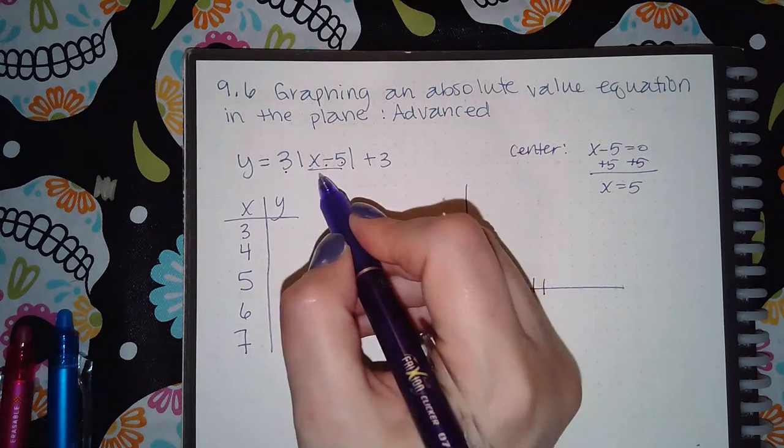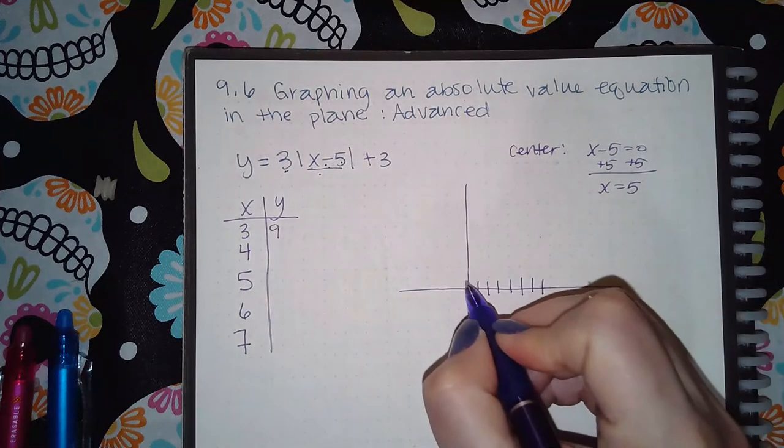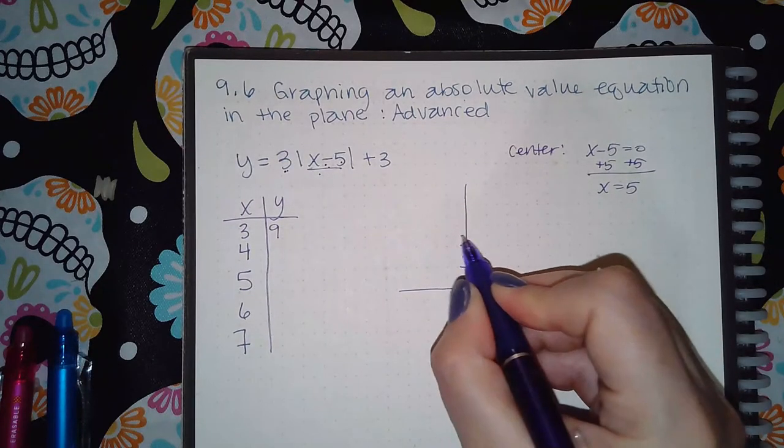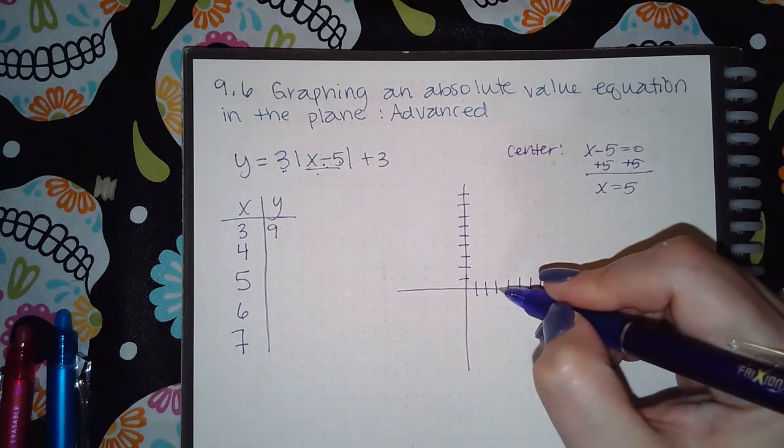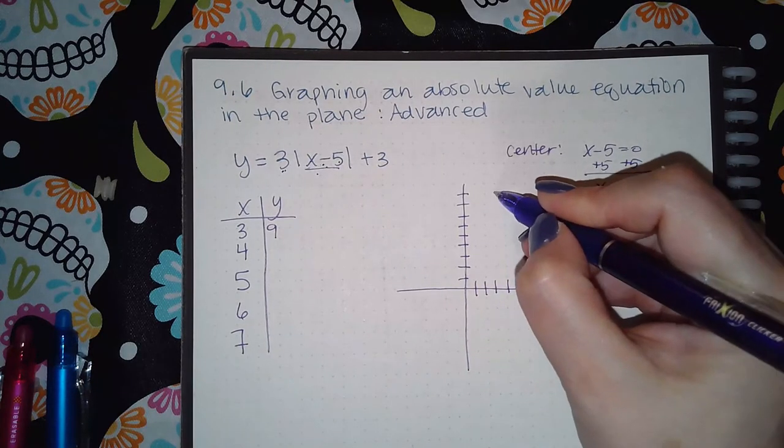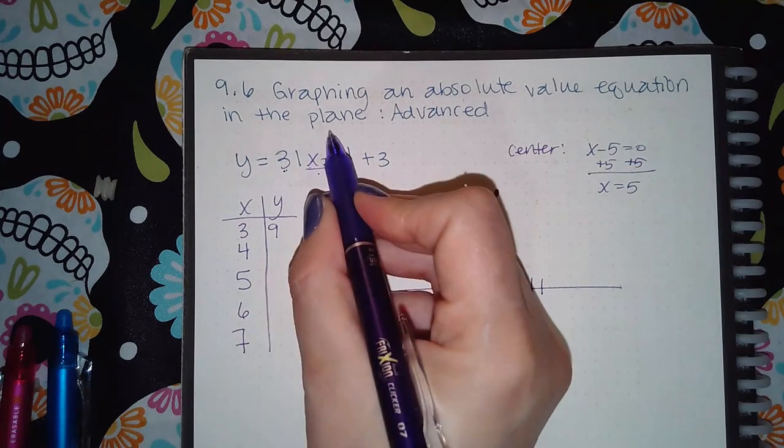I'm sorry, two times three is six, plus three is nine. So that's (3, 9). Then for four, I get negative one, which turns to positive one times